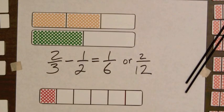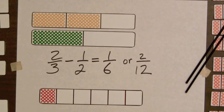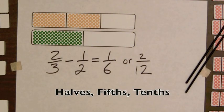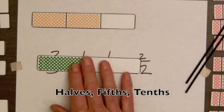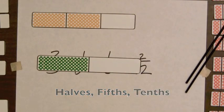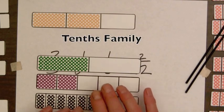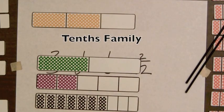For an activity, students can turn all the twelfths family fraction bars face down, select any two, and write a subtraction equation for the difference between the larger and smaller fractions. Some differences will be zero. This activity can also be done with the halves, fifths, and tenths — that is, for the tenths family.